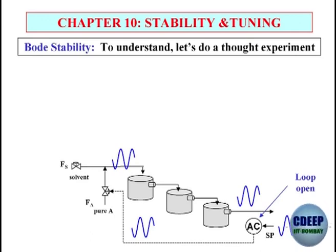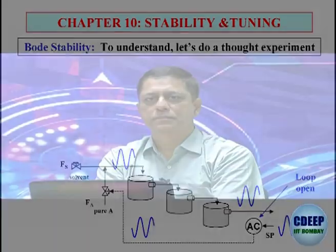What will happen if the system is critically stable? If the loop is critically or marginally stable, every time the signal returns it will have the same amplitude — sustained oscillation. If it is unstable, the amplitude will increase. Otherwise, in the third case, the amplitude will keep getting attenuated. This is the feel I am trying to develop before arriving at the stability criterion — that minus 180 degrees and gain equal to 1. That is what we are trying to explain in the time domain.